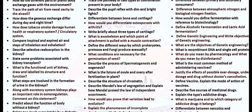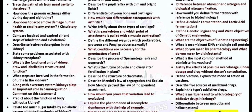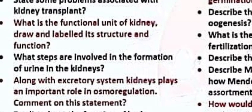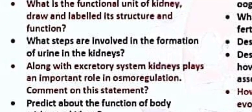What is the functional unit of the kidney? Draw and label its structures and functions. What steps are involved in the formation of urine in the kidney? Along with the excretory system, kidneys play an important role in osmoregulation — comment on this statement.